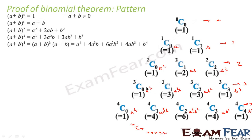Similarly, for n=3 it would be 3C0, 3C1, 3C2, 3C3 — since r goes from 0 to 3. So what we observe is the pattern is formed by nCr where r ranges from 0 to n, and n is the power of (a+b). We have observed that this is the coefficient, and the coefficient is in this form.